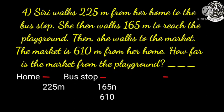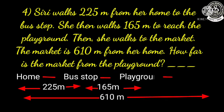As you can see here, by arrow marking I have shown you the total distance from home to market, which is 610 meters. From home to bus stop you know the distance, and from bus stop to playground you know the distance.